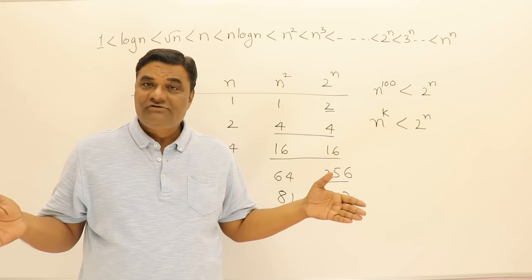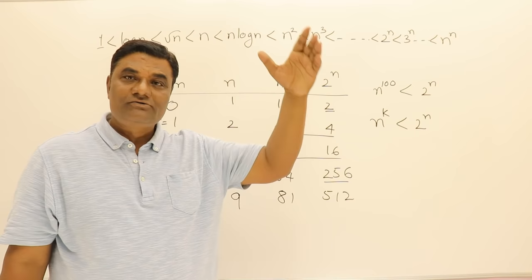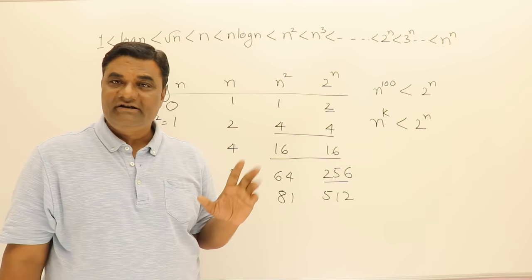So for larger values of n, at some point n power 100 will be smaller than 2 power n and from that point onwards 2 power n will be always greater. So there may be some starting value of n for which that will be greater.